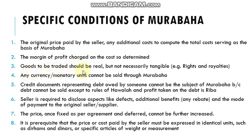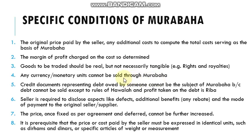Number three: the good to be treated should be real but not necessarily tangible — there could be rights and royalties as well, so non-tangible assets can be part of the Murabaha contract. Number four: any currency or monetary units cannot be sold through Murabaha because the same conditions apply — it could be a source of interest in the deal and this is prohibited.